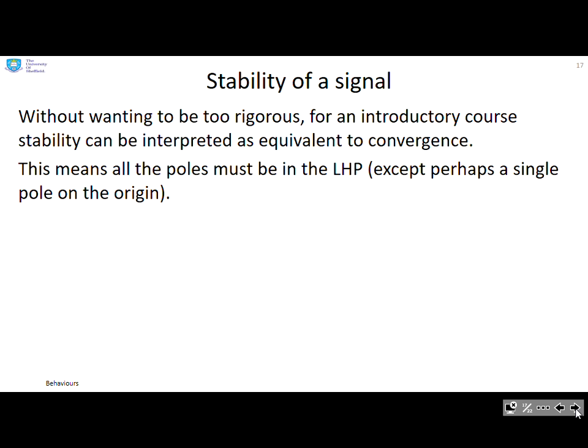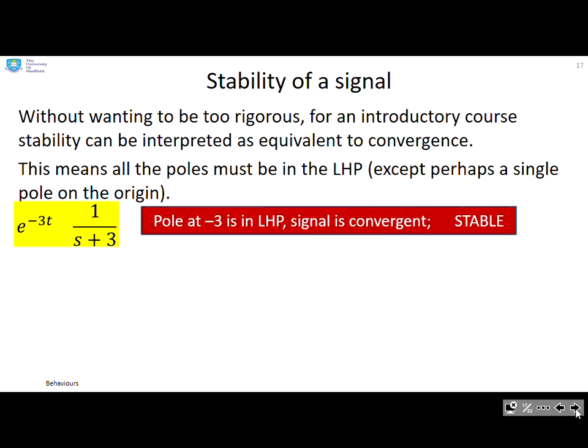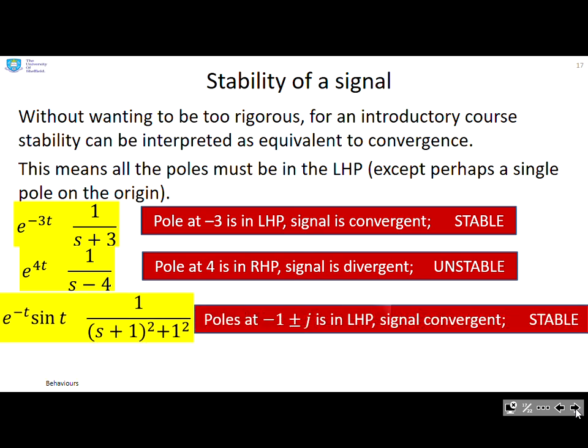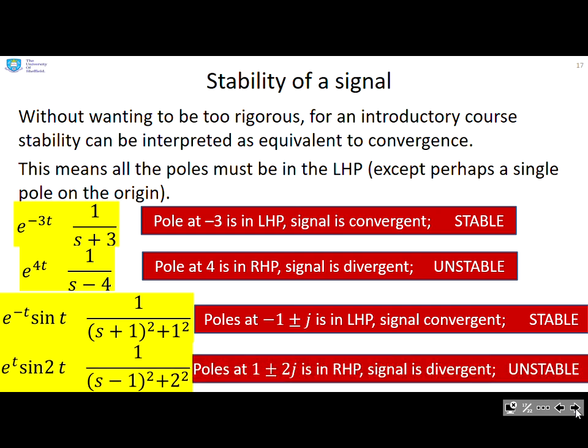Stability of a signal. Without wanting to be too rigorous for an introductory course, stability can be interpreted as equivalent to convergence. This means all the poles must be in the left half plane, except perhaps a single pole on the origin. Here you can see e to the minus 3t, the pole is at minus 3, this is in the left half plane, the signal is convergent, I'm stable. E to the 4t, the pole is at 4, it's in the right half plane, the signal is divergent, I'm unstable. And here's an exponential times a sine, the pole is at minus 1 plus or minus j, which is in the left half plane, the signal is convergent, I'm stable. But this one here, e to the t sine 2t, the pole is at 1 plus or minus 2j, which is in the right half plane, so the signal is divergent and it's unstable.